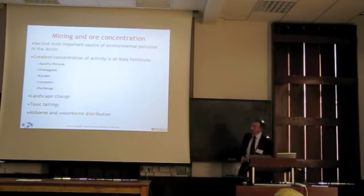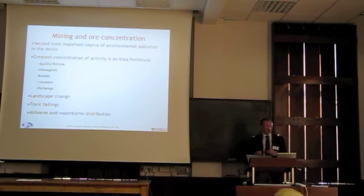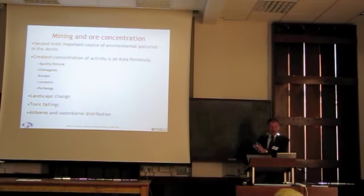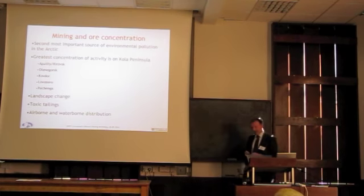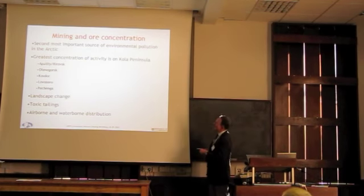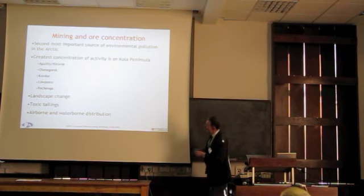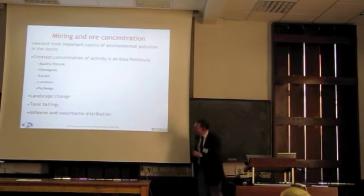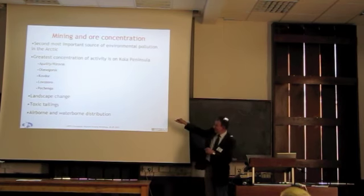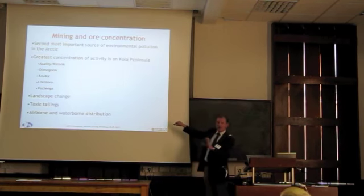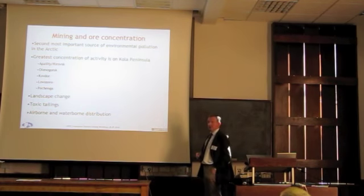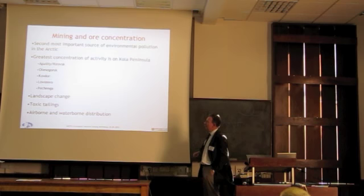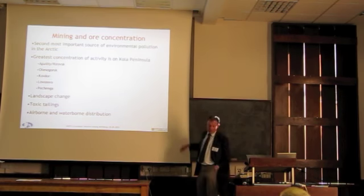I should say something about mining and ore concentration. This is the second most important source of environmental pollution in the terrestrial Arctic, and we can find most of this in Russia, on the coast of the Kola Peninsula. What it does is cause landscape change; it can produce tailings — the waste, the dusty stuff — which is soft and toxic. This stuff can go into the air or into the water.